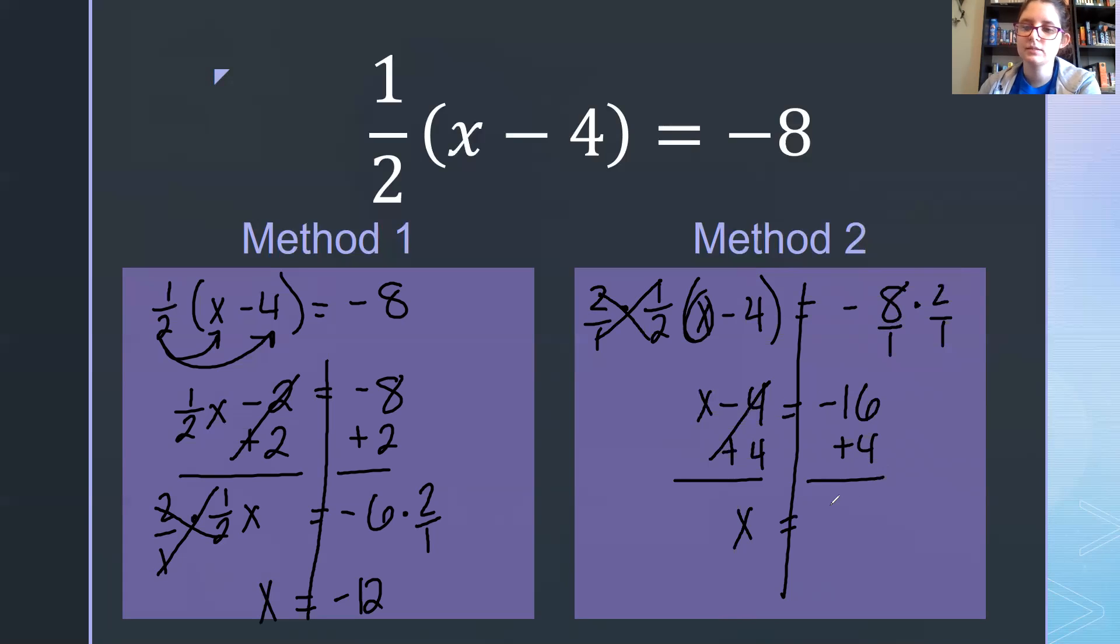So x equals 16 plus 4. Well, we have a negative, so different signs tell me to subtract. 16 minus 4 is 12. I have more negatives, so my answer is negative 12.